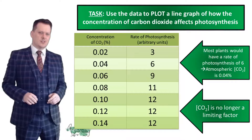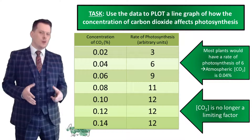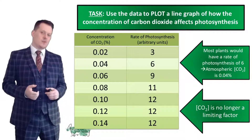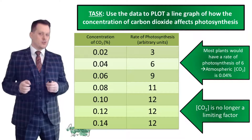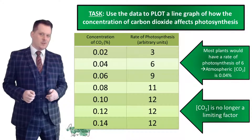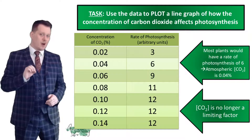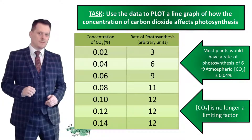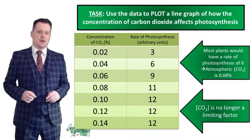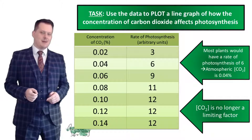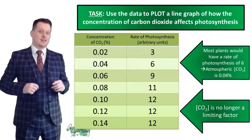The reason why the rate of photosynthesis doesn't increase past 0.10% CO2 is because the concentration of carbon dioxide is no longer a limiting factor — something else is stopping it from photosynthesizing quicker. It could be insufficient light energy, not enough water, temperature not at the optimum, or the number of chloroplasts. At the plateau, CO2 is not the factor preventing further photosynthesis. The rate of photosynthesis for most plants outside would be 6 arbitrary units, because the concentration of CO2 in the atmosphere is 0.04%, and at 0.04% on our graph the rate is 6.